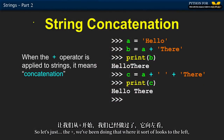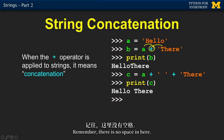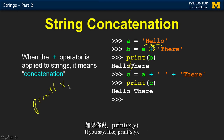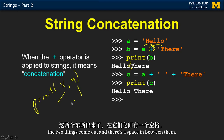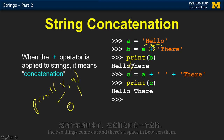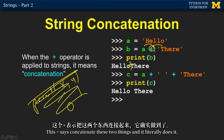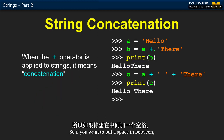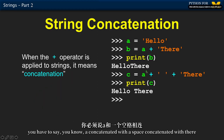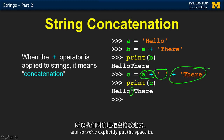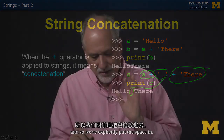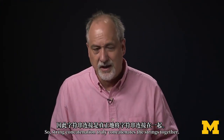The plus operator concatenates strings — it looks to the left, looks to the right, and concatenates. Remember there is no space added automatically. If you say print x comma y, the two things come out with a space in between. But the plus operator literally concatenates. So if you want a space in between, you have to explicitly concatenate a space in there. String concatenation truly concatenates the strings together.